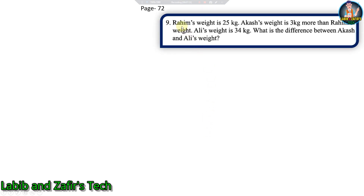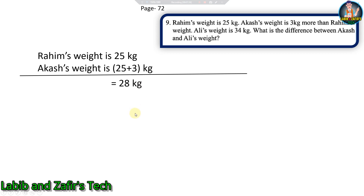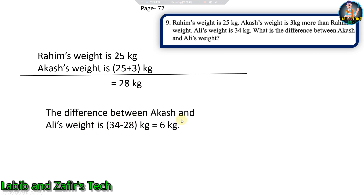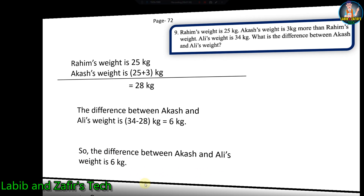Ninth word problem: Rohim's weight is 25 kg. Akash's weight is 3 kg more than Rohim's weight. Ali's weight is 34 kg. What is the difference between Akash and Ali's weight? Akash's weight is 25 plus 3 equals 28 kg. The difference between Akash and Ali's weight is 34 minus 28 equals 6 kg.